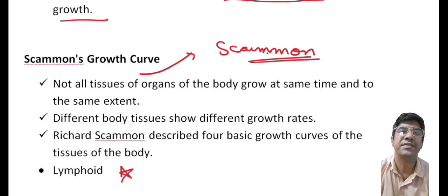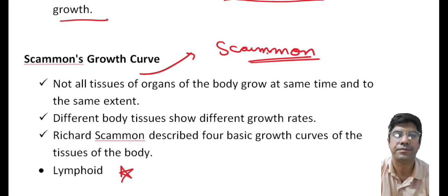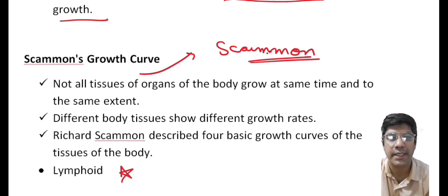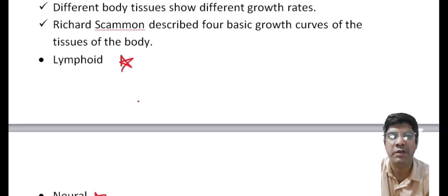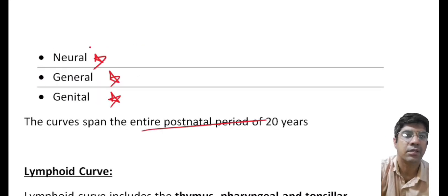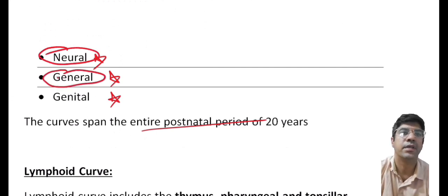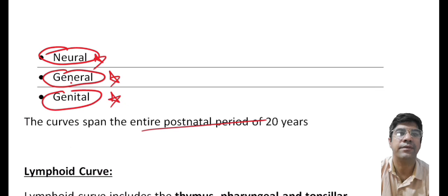The Scammon growth curve is a classification that describes the different growth rates of various tissues and organs in the human body during the postnatal period, which spans around 20 years. There are four distinct curves, each corresponding to a specific category of body tissue and their growth patterns: the lymphoid curve, neural curve, general curve, and genital curve. The lymphoid curve includes tissues like the thymus, pharyngeal and tonsillar adenoids, and interstitial lymphatic tissue.